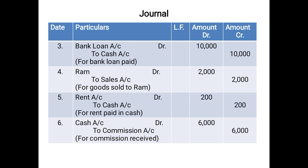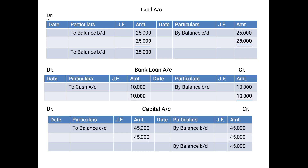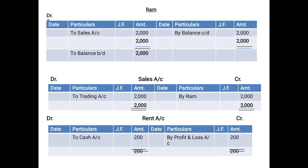The next entry is RAM debited, To Sales Account. For the RAM Account, you do not record the debit (RAM) aspect — you record the credit aspect, which is Sales. Since Sales is being credited, it will be posted on the debit side of RAM Account as 'To Sales Account 2,000'. In the Sales Account, you record the debit aspect — RAM is being debited — so it will be posted on the credit side as 'By RAM 2,000'.